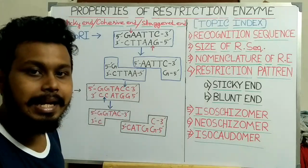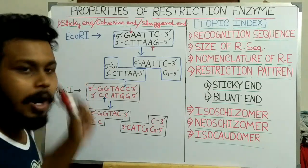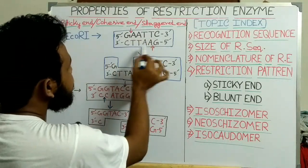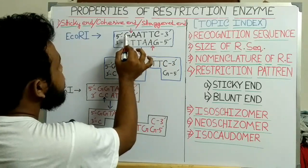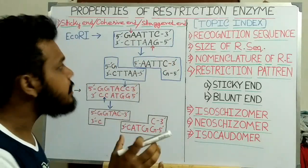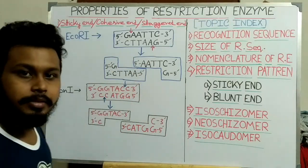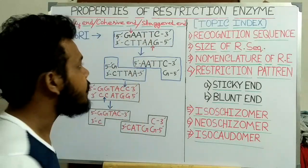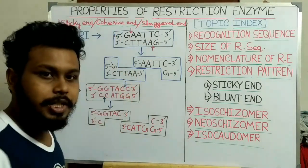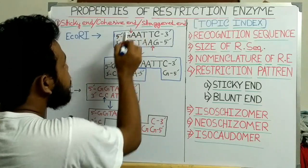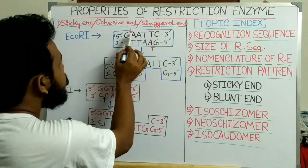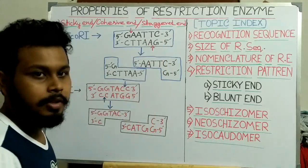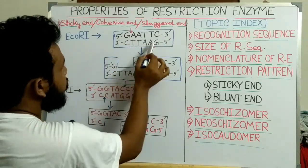To explain the sticky end, I use EcoRI as an example. This is a particular sequence 5' GAATTC, which is recognized by the EcoRI restriction enzyme. After recognizing this sequence, EcoRI cuts the DNA at the phosphodiester bond between two nucleotides at the 5' end of both strands. You can see that it cuts here and here.